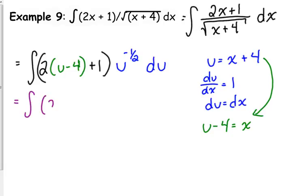So we've got 2u minus 8 plus 1. So 2u minus 7 is that numerator. We need to distribute that u to the negative 1 half.